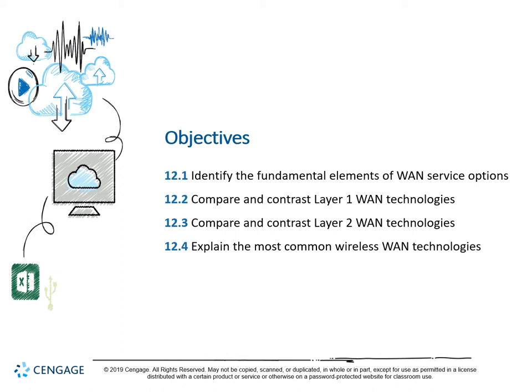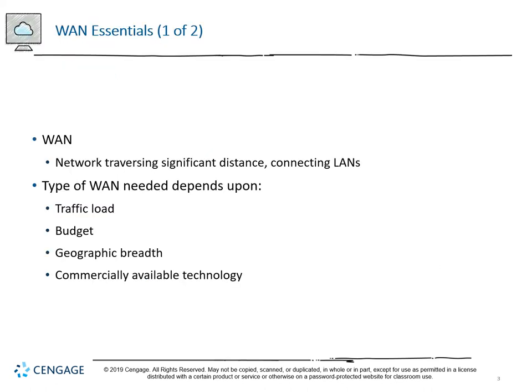We're going to identify some fundamental elements of WAN service options, compare and contrast layer one and layer two WAN technologies, as well as the most common wireless WAN technologies. A WAN or wide area network is a type of network that traverses a significant distance, essentially built to connect LANs together. The type of WAN we need in a particular implementation is based on the load of traffic expected, the budget of those implementing and maintaining it, the geographic breadth of coverage, and the commercially available technology to perform the implementation.